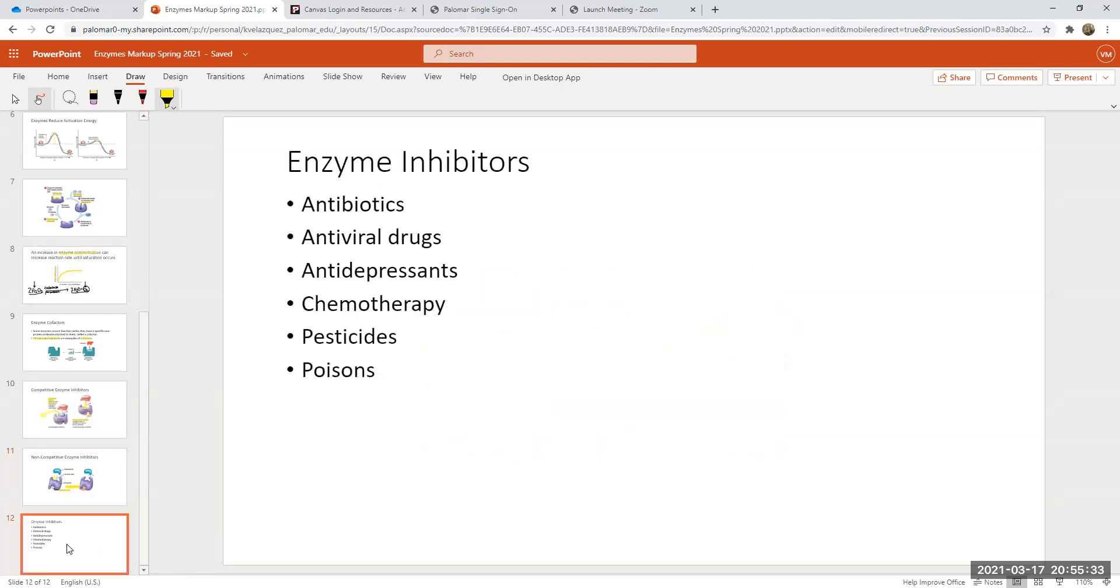Enzyme inhibitors are important in our body, but we also make a lot of products from enzyme inhibitors. Antibiotics, I just mentioned. We have antiviral drugs. In our fight against HIV in particular, we have a lot of antiretroviral drugs that have been successful in stopping that virus from replicating. Antiviral drugs that are enzyme inhibitors are incredibly important. Antidepressants, there are certain categories that are enzyme inhibitors. Certain forms of chemotherapy that are enzyme inhibitors. And we have pesticides and poisons that are manufactured that are enzyme inhibitors. So those are the enzymes.